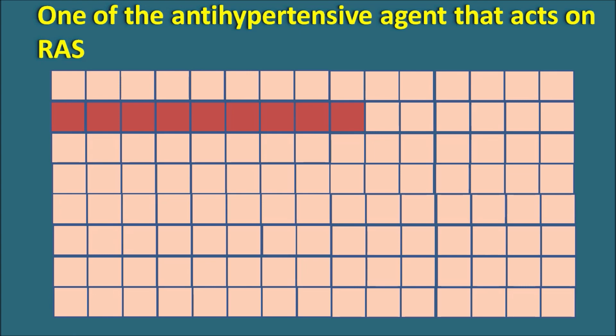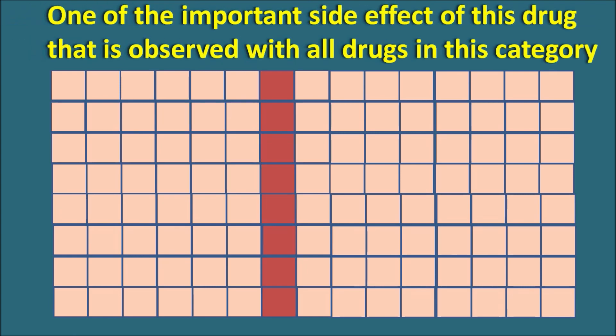We will discuss all the questions initially so you can try before we go to the solution. After completing all the clues you will be able to identify the name of the drug — if you get it, post it in the comment box. The second clue: one of the important side effects of this drug that is observed with all drugs in this category. We have to fill in a side effect observed with all drugs within this category.